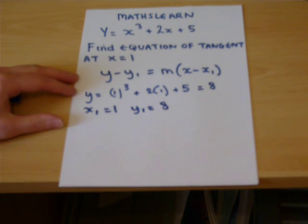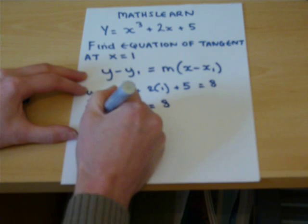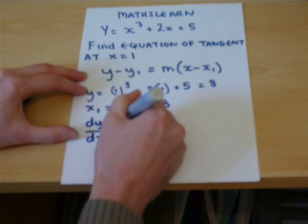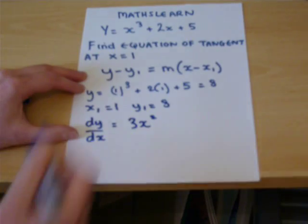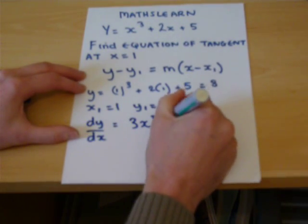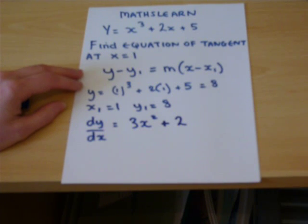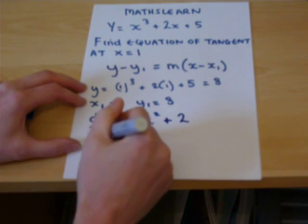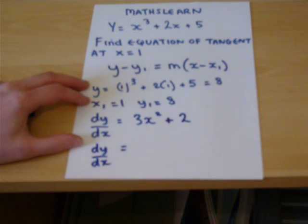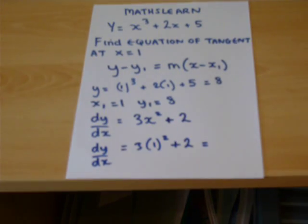To find the gradient, we use the derivative. At x equals 1, the gradient is 3 times 1 squared plus 2, so at x equals 1, the gradient equals 5.